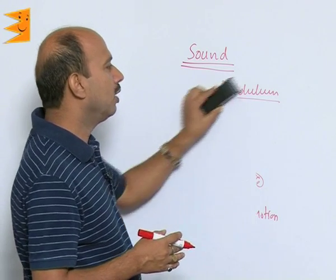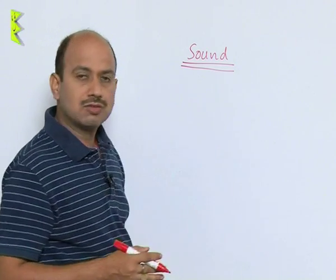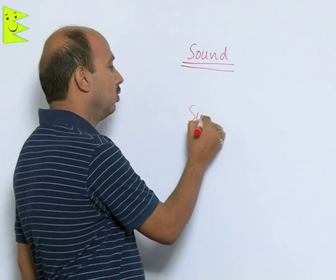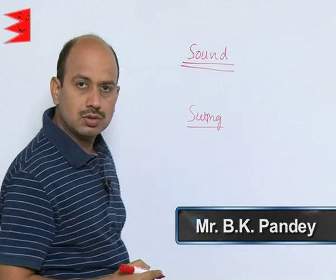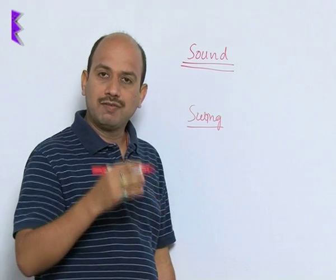Similarly, an example of a swing you can take. In the parks you might have seen swings. An example of a swing is also an example of oscillatory motion, that is called to and fro motion.